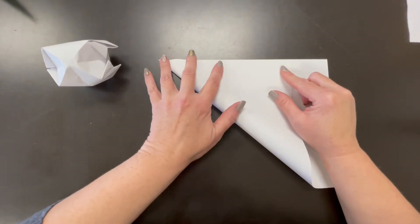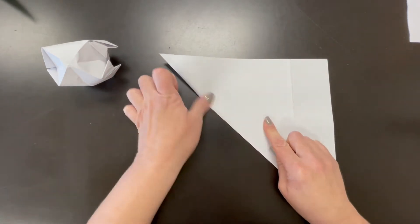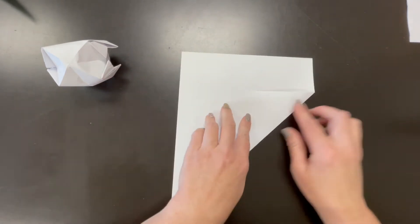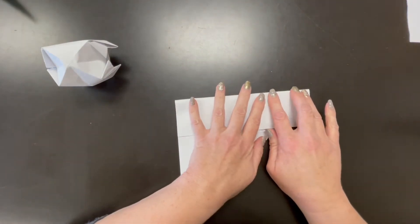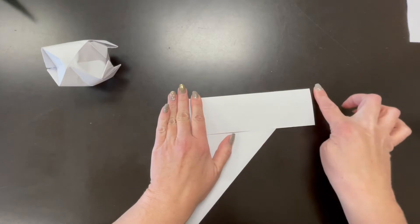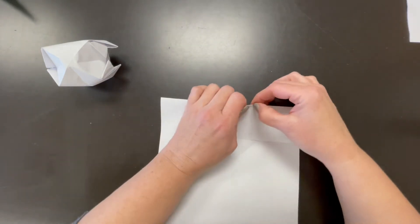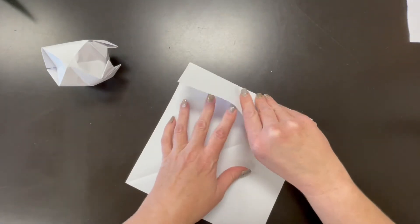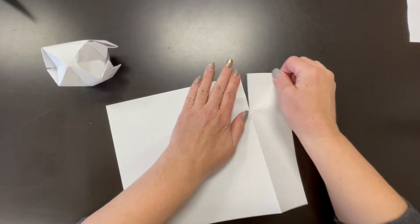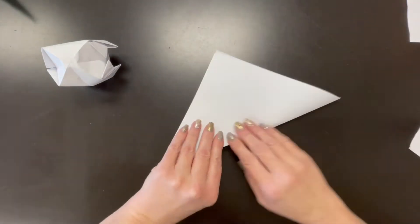The first thing we need to do in origami is work with a square. Traditional origami is always a square. Take a regular standard piece of paper and fold that triangle along the side, then fold that rectangle down. Now you can use scissors to cut that little edge off or use your nail technique where you scritch it really hard or use something hard to go against it. Then you just gently rip it off. Voila! Sometimes it's smoother than scissors.